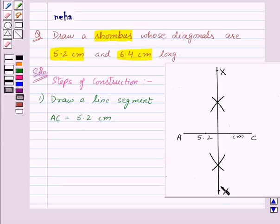So, here we have made XY as the perpendicular bisector of AC. So, let's write our second step of construction. Draw the perpendicular bisector XY of AC. Also,